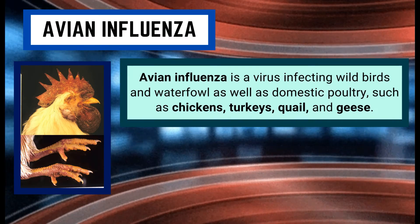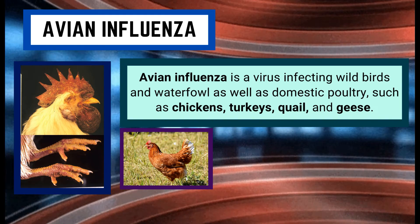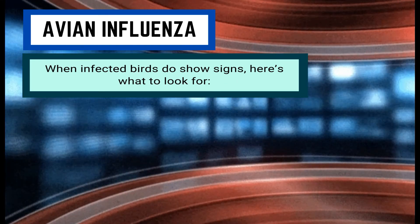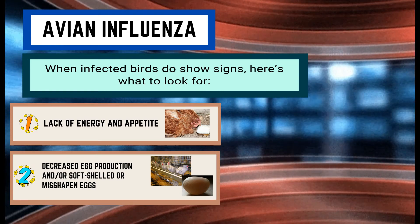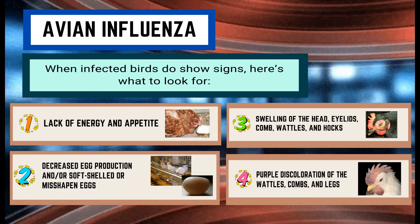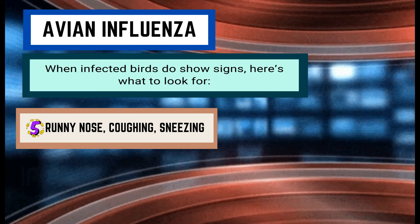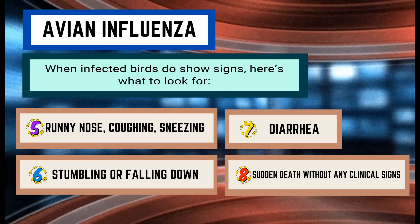We have Avian Influenza, a virus infecting wild birds and waterfowl as well as domestic poultry such as chickens, turkeys, quail, and geese. When infected birds show signs, look for the following: lack of energy and appetite; decreased egg production or soft-shelled or misshapen eggs; swelling of the head, eyelids, comb, wattles, and hocks; purple discoloration of the wattles, combs, and legs; runny nose, coughing, and sneezing; stumbling or falling down; diarrhea; and sudden death without any clinical signs.